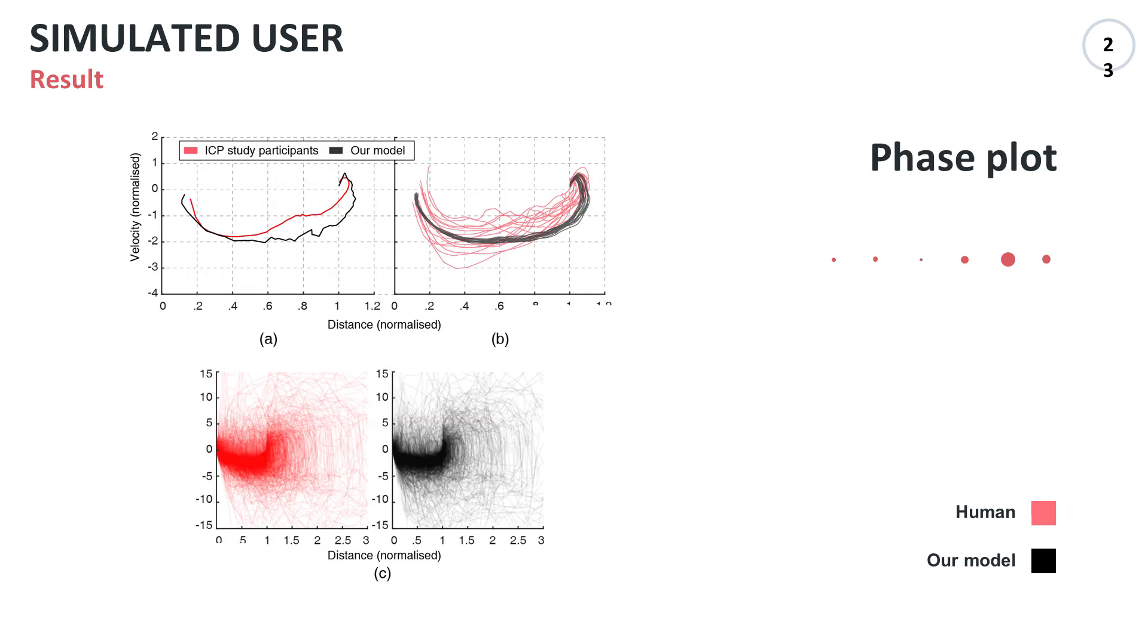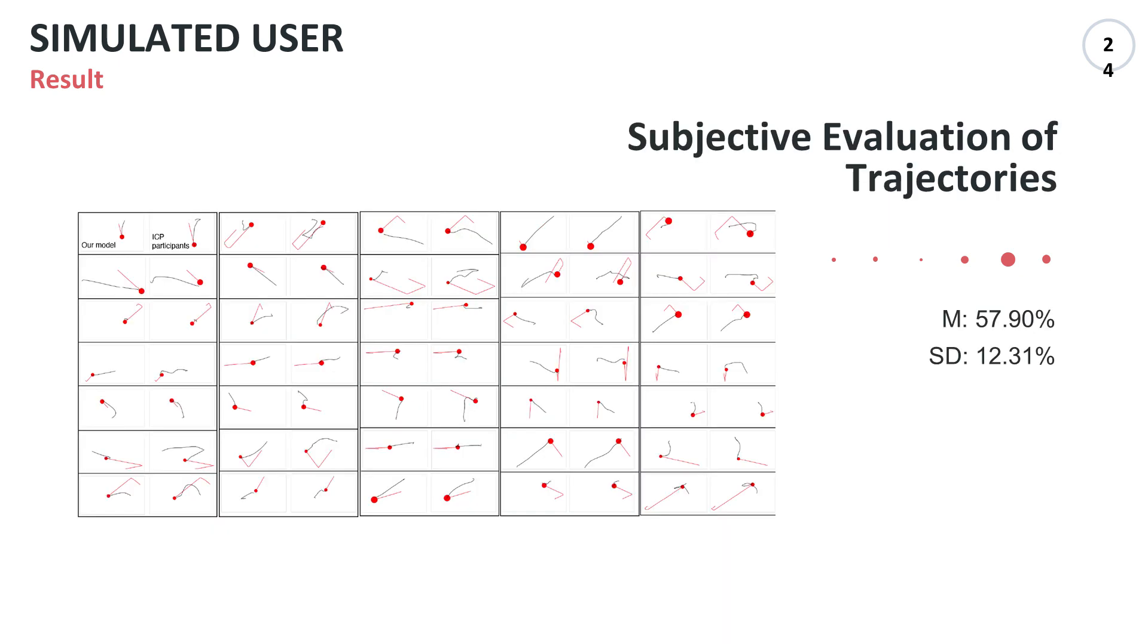This is the phase plot of the relative motion between the cursor and the target. The simulation faithfully reproduces the trajectory of human on average and the trajectory variability within a participant. In the subjective evaluation study using the video with the trajectory removed, the participants hardly distinguished between the two trajectories of the cursor and target.